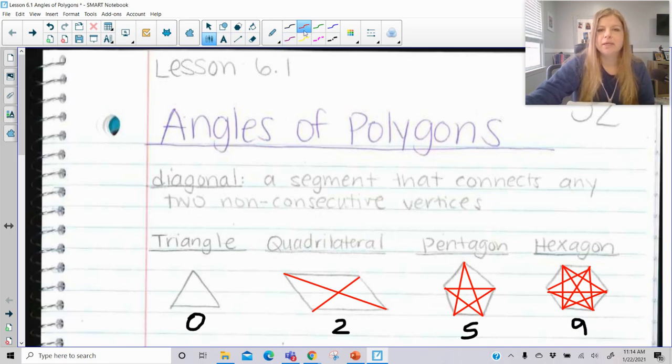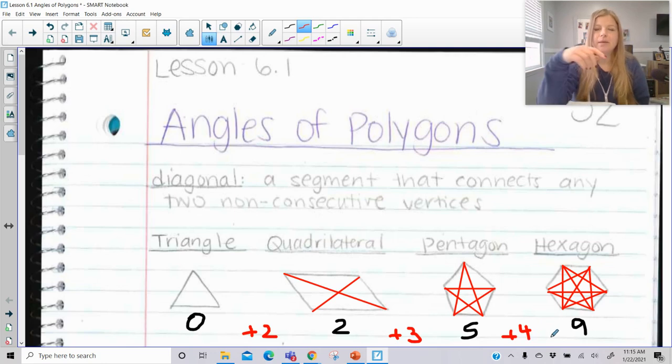Something we might notice about patterning here from zero to two, five, nine. It's increasing by two, and then it's increasing by three, and then four. So as the number of sides increases, the number of diagonals is increasing, adding on to the previous amount by one more. So adding two, adding three, adding four, the next one we could then say is going to add by five.